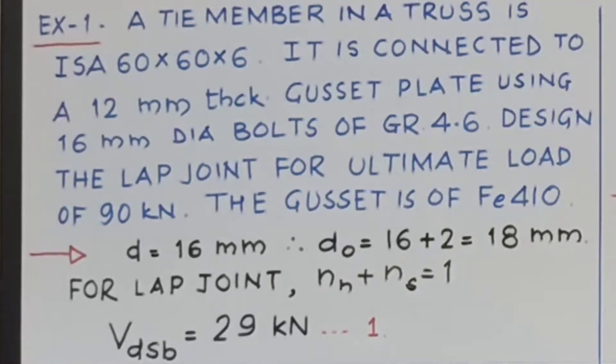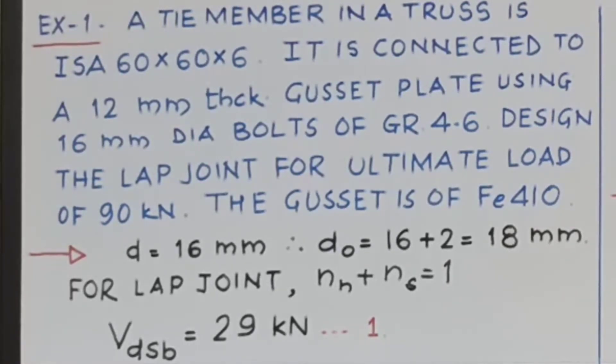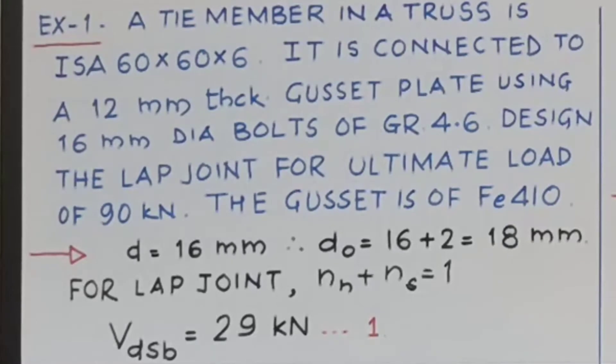VDSB will be equal to 400, that is FUB multiplied by into bracket. What is ANB for 16 mm? That is 157 into 1 bracket complete because NS is equal to 0, so second term will be 0, divided by 1.25 into 10 raised to 3 into root 3, don't forget root 3 and you will come to know that its value is 29 kilonewton.